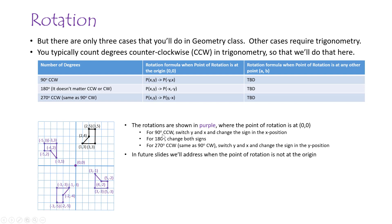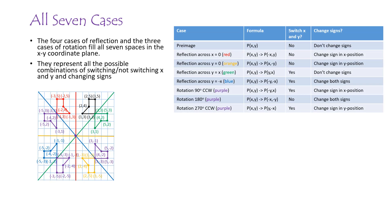We'll cover the case where the point of rotation is not at the origin in the next couple of slides. If we combine the four cases of reflection and the three cases of rotation, all these cases fill in all seven available spaces for the pre-image — all the possibilities. Another way to look at it: these cover all possibilities for switching or not switching X and Y, and changing signs.